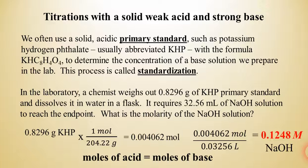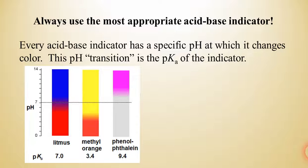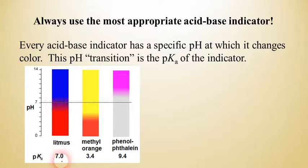Whenever we do an acid-base titration, it's important that we always use the best indicator for the job. In our laboratory stock room, we normally have several acid-base indicators available, and different indicators change colors at different pH points. Litmus changes from blue to red around pH 7, so its pKa is 7.0. Methyl orange changes from yellow to orange around 3.4, so its pKa is 3.4.